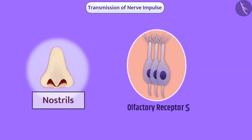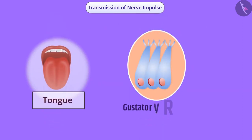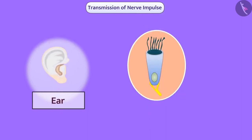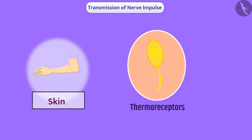For example, olfactory receptors present in our nostrils detect smell. Gustatory receptors present in the tongue identify taste. Photoreceptors present in the eyes identify light, and phonoreceptors present in the ear detect sound.